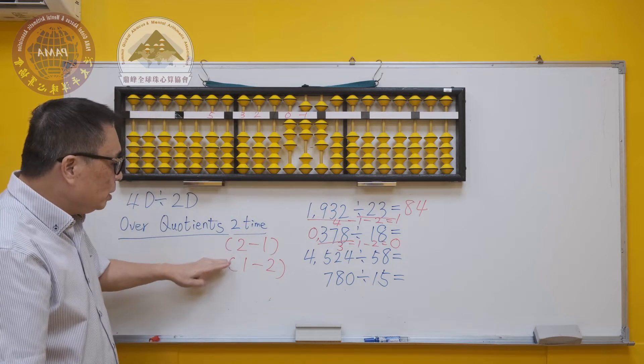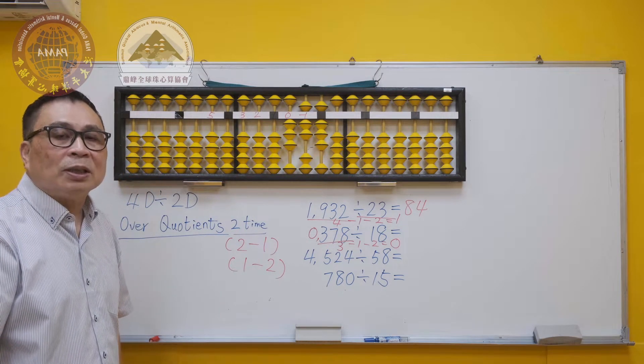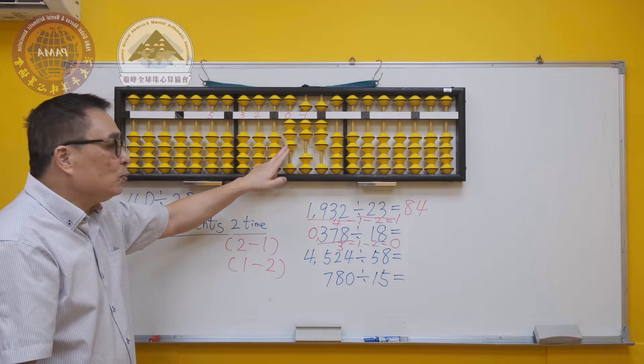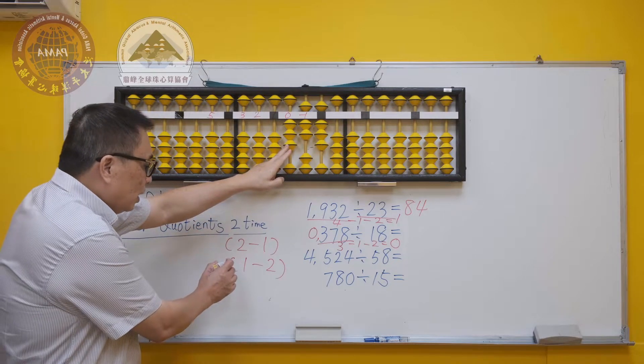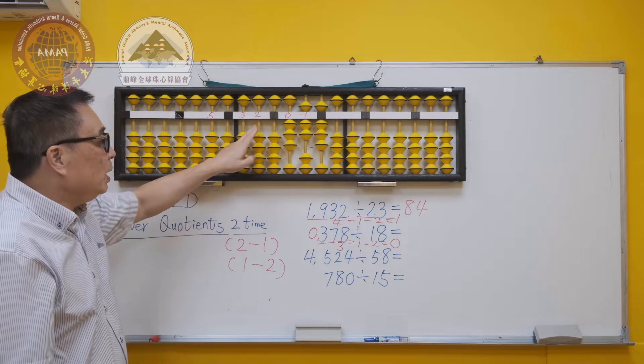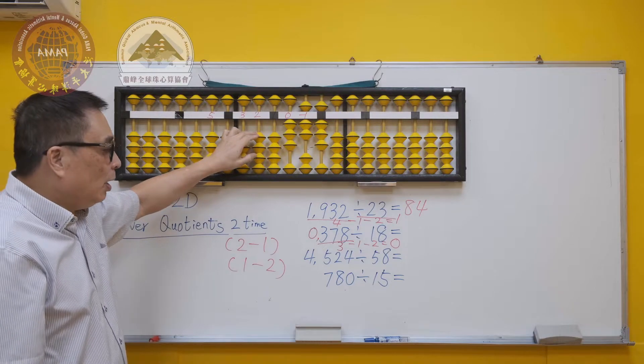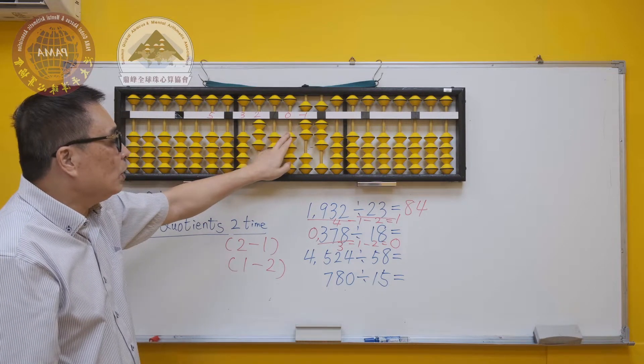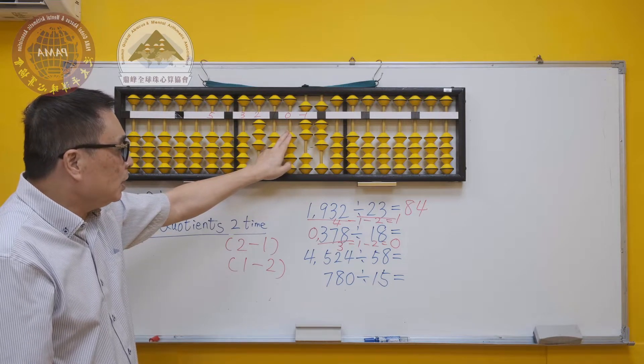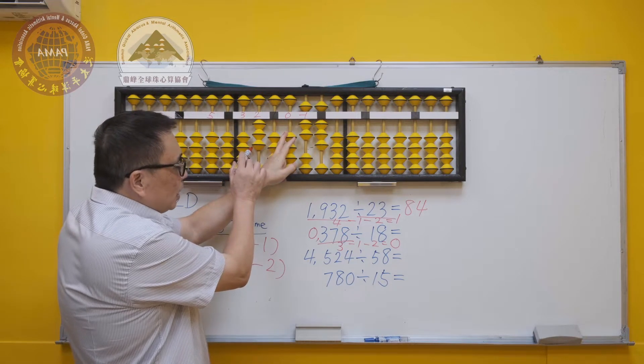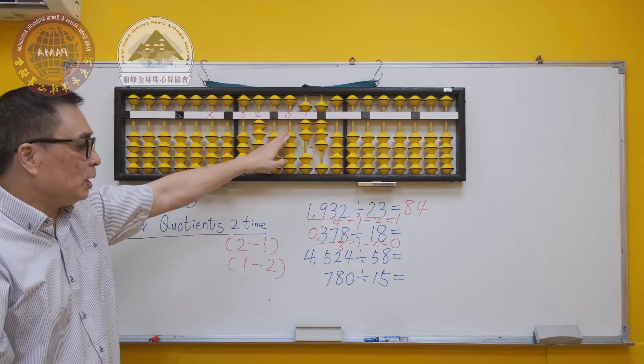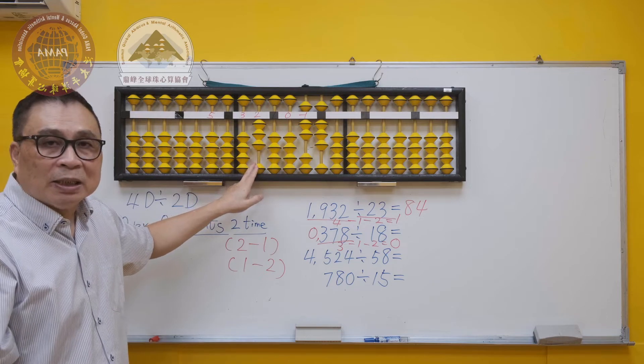We must be aware of the 2,1 and 1,2 principles. 3 is bigger than 1. So we only need one digit to minus. We will place the answer on the second rod of the left. 1 times 3 is 3. Please keep your fingers here. 2 times 4. Next, the answer 3 times 8, which is 24. However, we don't have enough to minus. This is called over quotient.